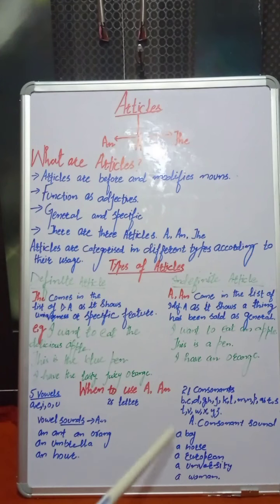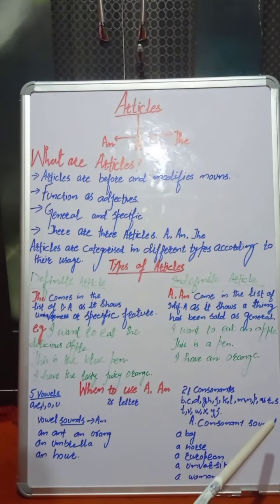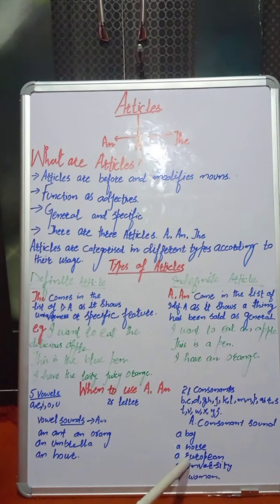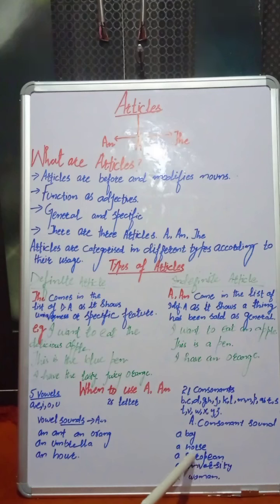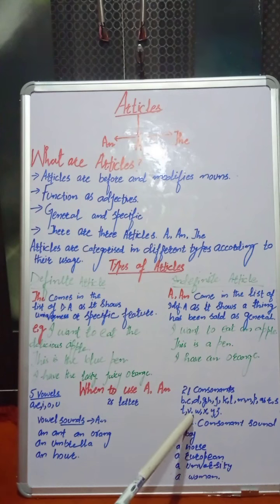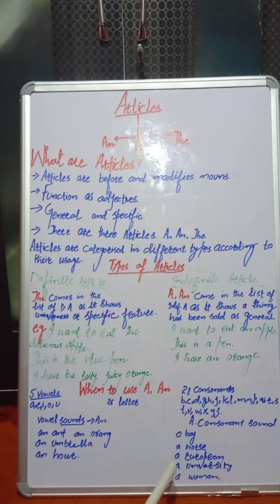Don't get confused — we have to look for the sound. The word 'European' — the U gives a 'yuh' sound. 'University' also gives a 'yuh' sound. 'Yuh' starts from Y, which is a consonant. That is why we use 'a' here — 'a university,' 'a European.'